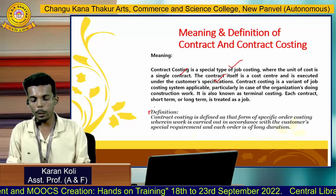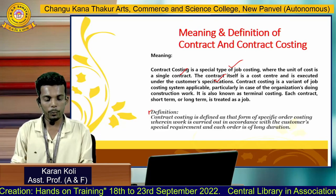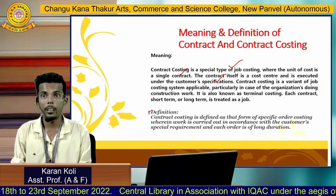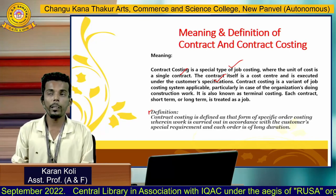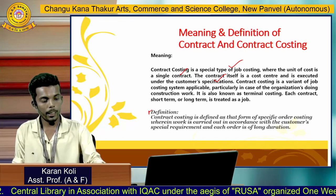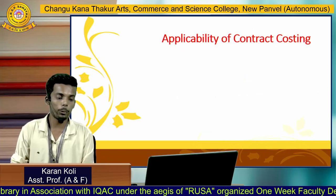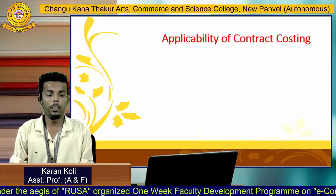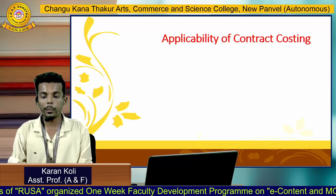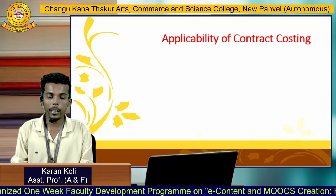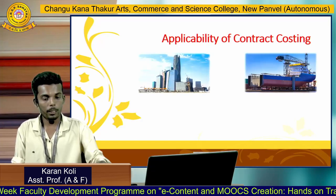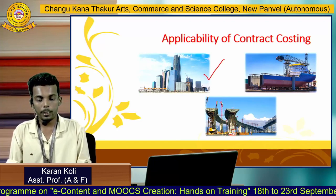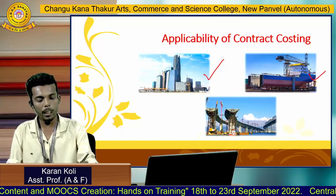Contract costing is defined as a form of specific order costing wherein work is carried out in accordance with the customer's special requirements. Once those requirements are fulfilled, the contract work is done. This type of costing is applicable in building construction, ship building construction, and engineering work, which take more than one year to complete.